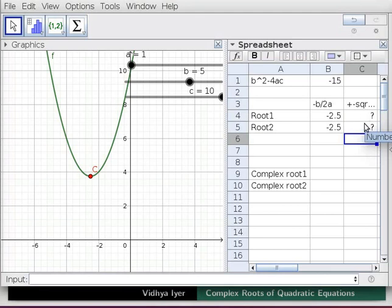Again a question mark appears in cell C5. There are no real solutions to the negative square root of discriminant. In input bar type B4 + C4, 0 in parenthesis and press enter.